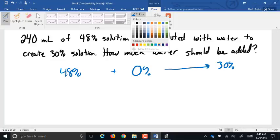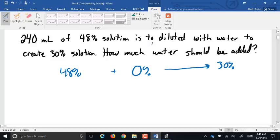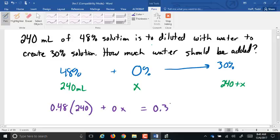Okay, so do we have an amount given for any of these? 240 milliliters, 240 milliliters of the 48%. So we're trying to find how much water, that's the 0%. So the 30% is 240 plus X. Just adding those two together. So the equation, 48% is 0.48, is going to multiply the 240. 0% is just 0 times X. And that's going to equal 30% is 0.3 times 240 plus X.